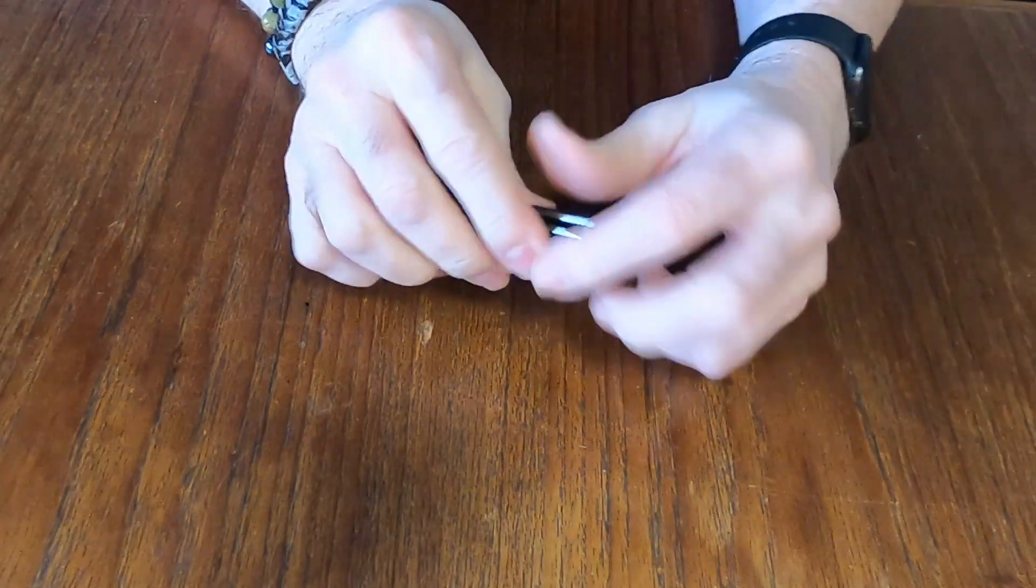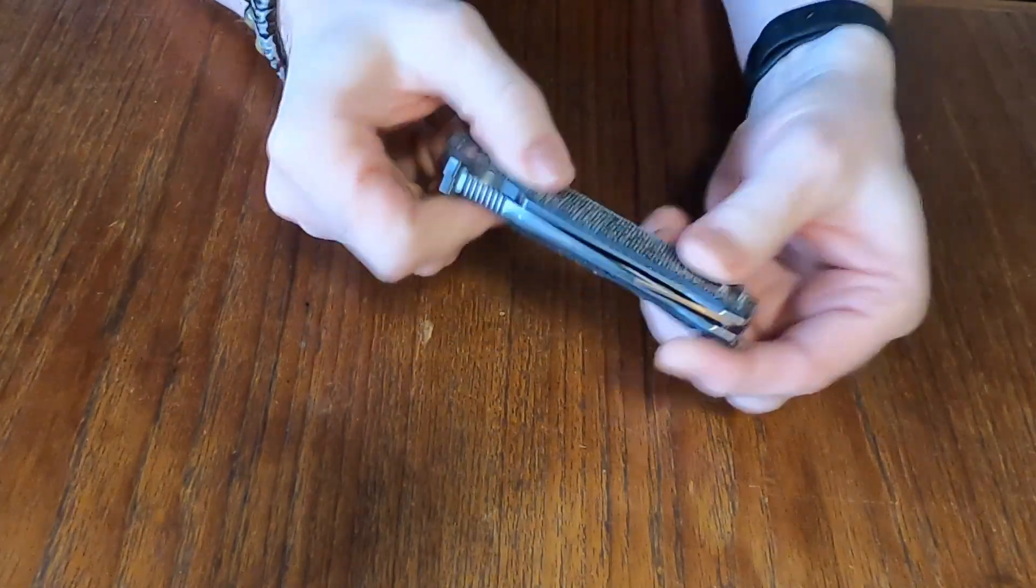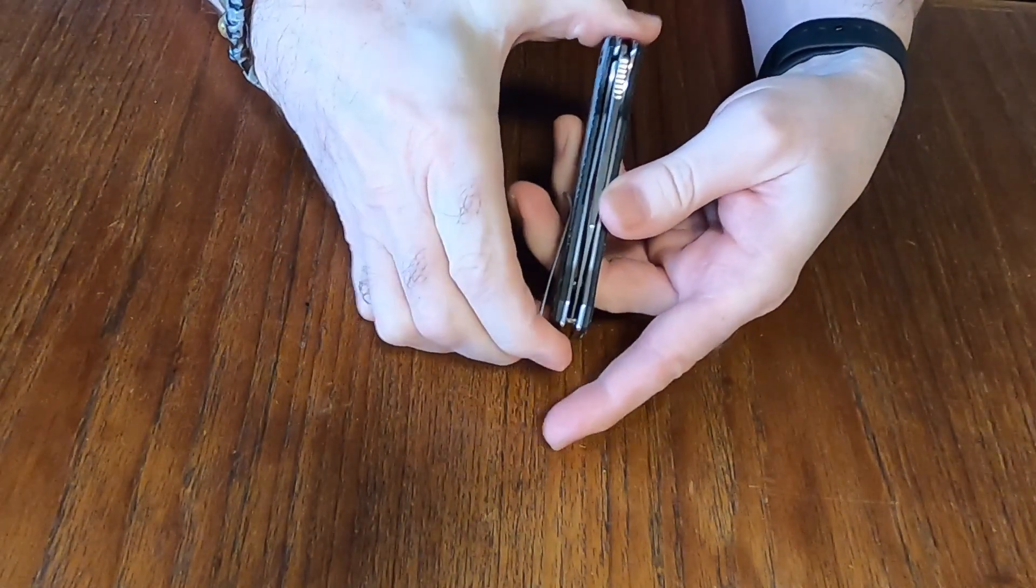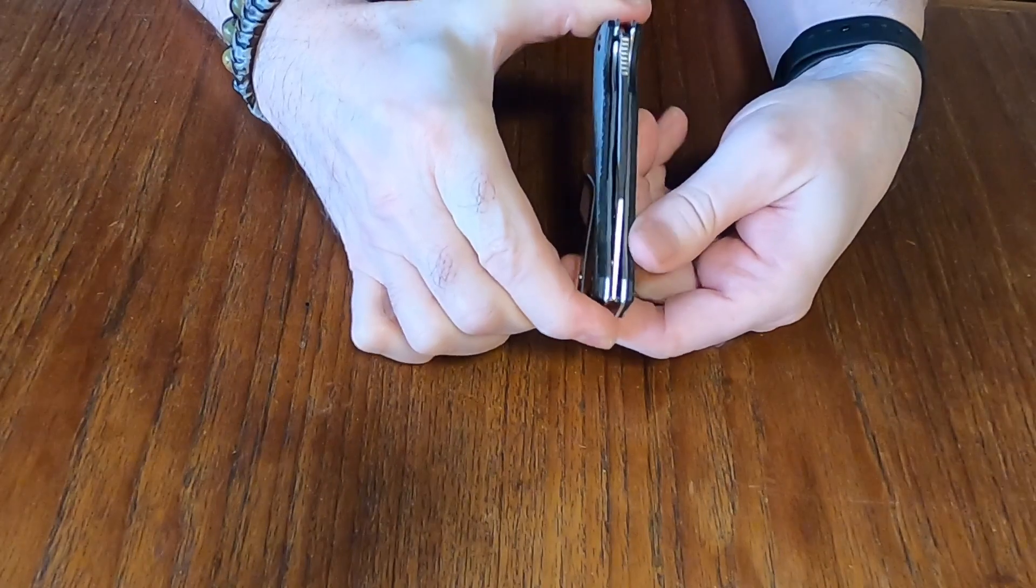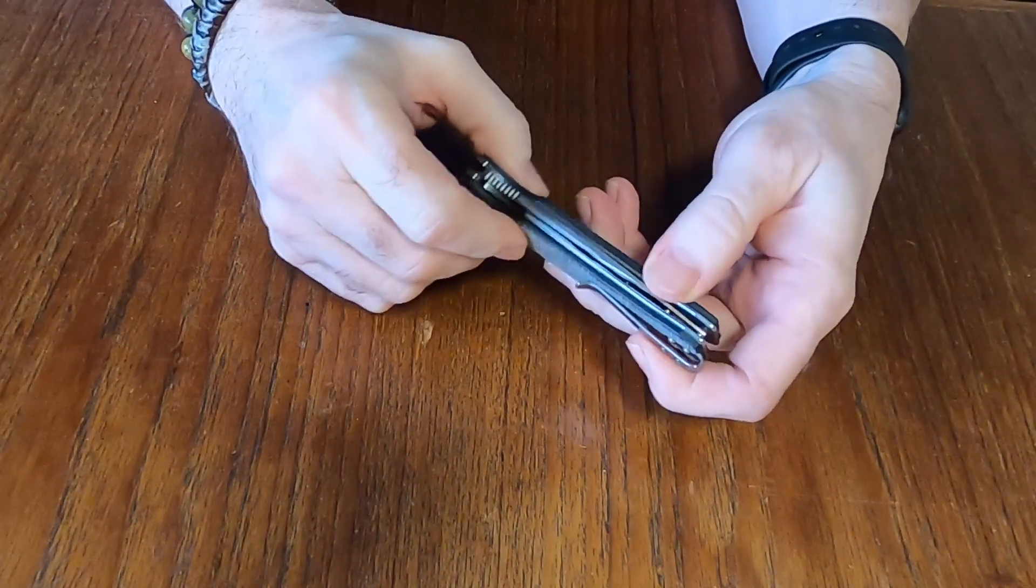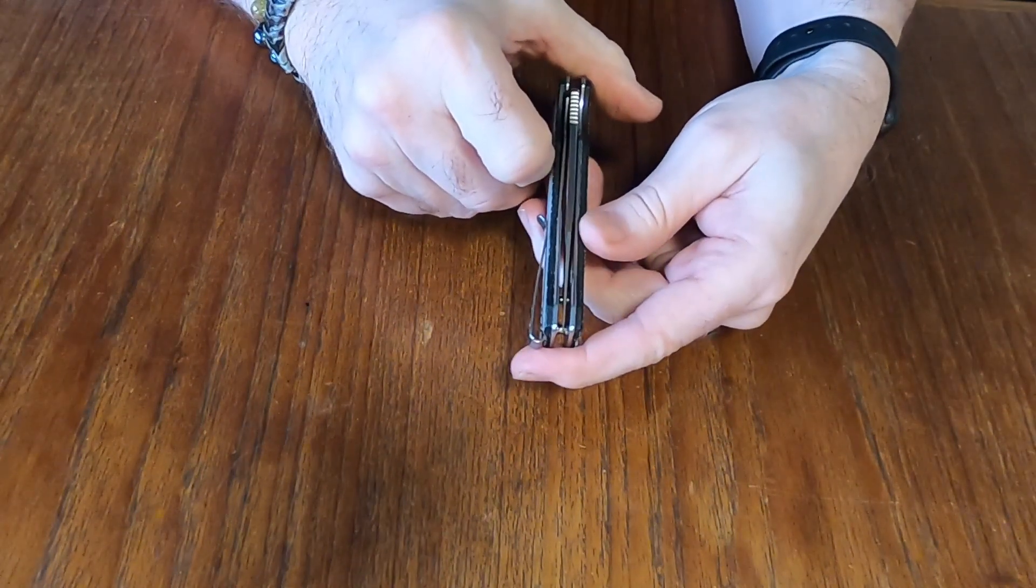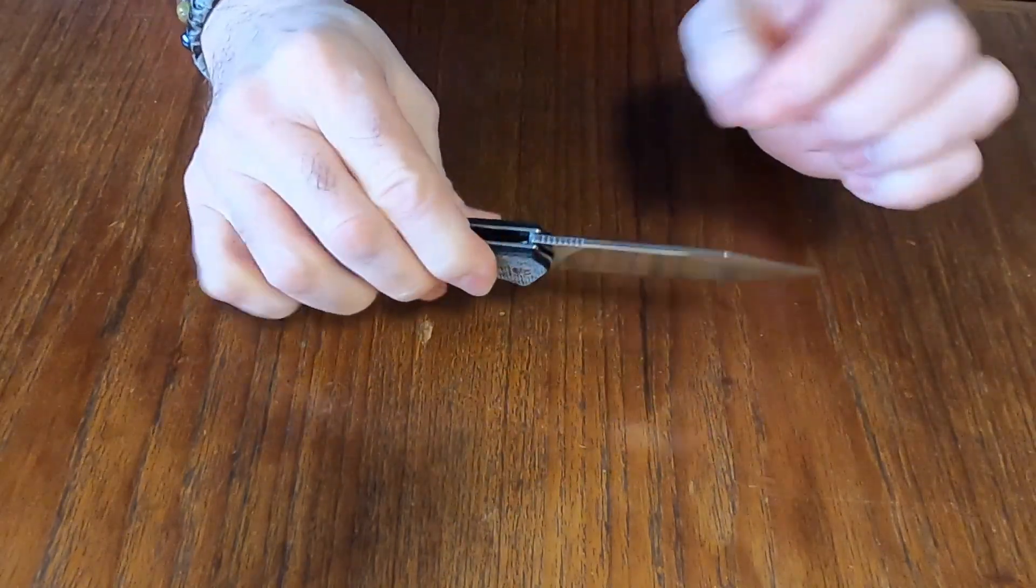You want to keep your fingers out of the way, a little PSA there. Keep your fingers away from the sharp edge of the blade in case you weren't aware of that. And centered, no blade play, we already discussed that.